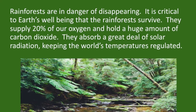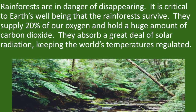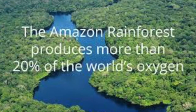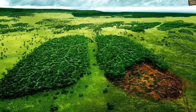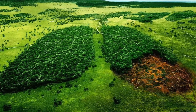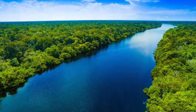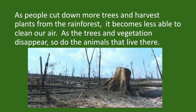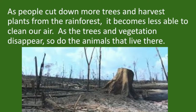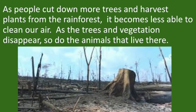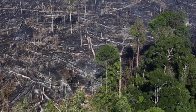Rainforests are in danger of disappearing. It is critical to the Earth's well-being that the rainforests survive. They supply 20% of our oxygen and hold a huge amount of carbon dioxide. They absorb a great deal of solar radiation, keeping the world's temperatures regulated. As people cut down more trees and harvest plants from the rainforest, it becomes less able to clean our air. As the trees and vegetation disappear, so do the animals that live there.